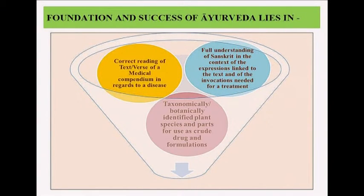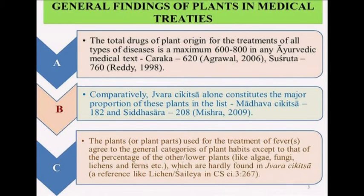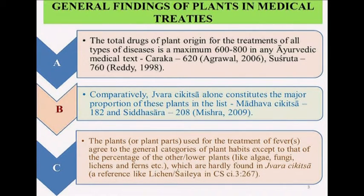It is essential now for all Ayurvedic practitioners to understand Sanskrit equally, to become confident in plant taxonomy, and to know the correct crude drug parts. My general finding is that total drugs of plant origin in all the Sanskrit medical texts belong to only 600 to 800. If a correct reading is done of Charak Samhita, Sushrut Samhita, or Madhava Chikitsa, only 600 to 800 plants are found. Madhava Chikitsa contains the maximum plants in the Jwara Chikitsa chapter — about 182 plants out of 600 — and these plants align with the parts used for medicines and treatment of fever.